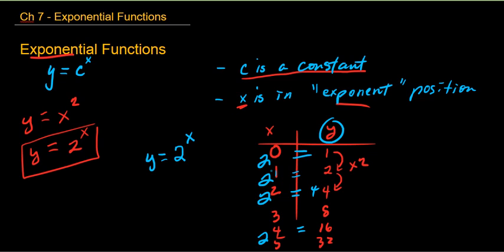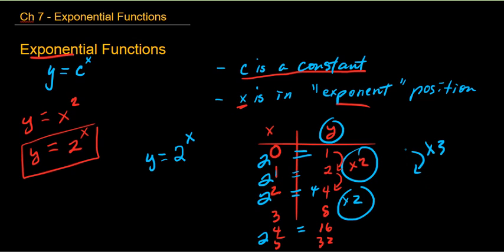If it tripled every time, what would the function be? y equals 3 to the power of x. If three was the factor — we're multiplying by two every time here, so two is the base. If we multiplied by three every time, we'd have another power of three each time. So that's the base.